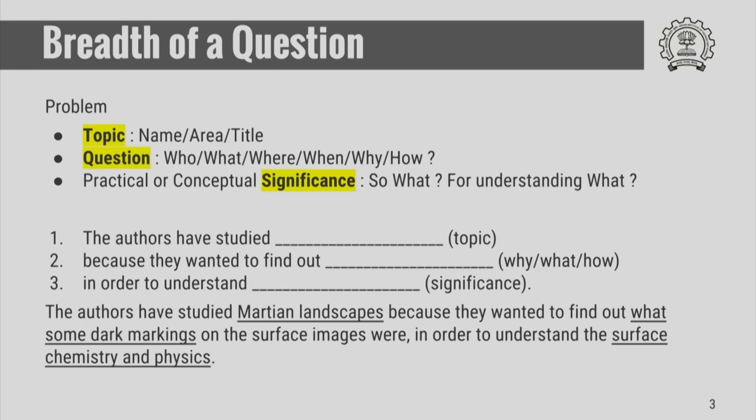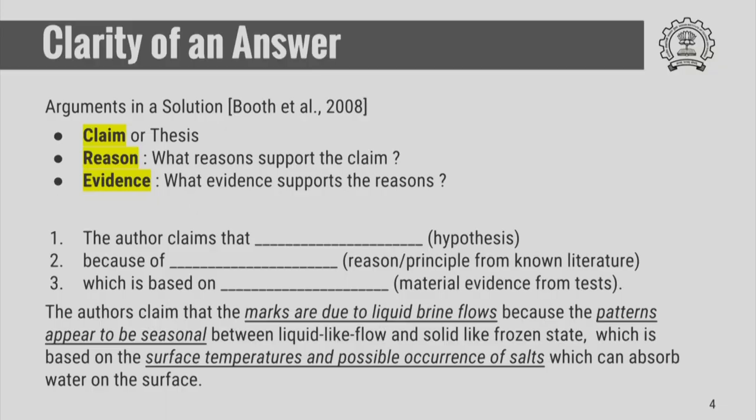So once you read an article, you should be able to summarize it in this structure — the question. Now comes the answer. Recall that the answer needs to exactly answer the question, but it can go one step further. The answer again has a structure with three important components. First is the claim or thesis of the author — what do the authors find in answer to the question they raised? Second, what reasons support their claim — principles already known from previous literature that led them to this claim? And finally, what is the evidence that supports that this claim is true?